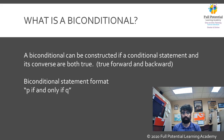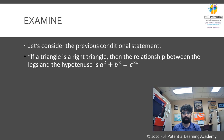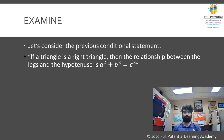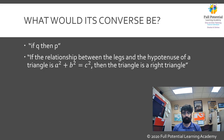With this knowledge, let us analyze our previous conditional statement: if a triangle is a right triangle, then the relationship between the legs and the hypotenuse is a squared plus b squared equals c squared. Let's now formulate the converse of the Pythagorean theorem: if the relationship between the legs and the hypotenuse of a triangle is a squared plus b squared equals c squared, then the triangle is a right triangle.